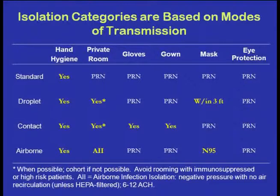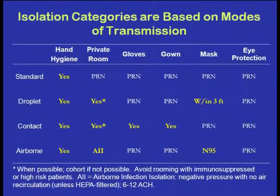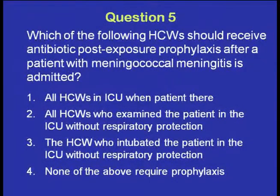Summary of precaution types: standard precautions apply to all patients. Droplet precautions require masking within three to six feet. Contact precautions require gown and gloves. Airborne precautions require a private room with negative pressure and an N95 respirator. Hand hygiene applies to all categories. Private rooms are mandatory for airborne, preferred for contact and droplet. Gloving is required for contact; gowning similarly. N95 masks are worn to enter a room of someone with an airborne disease. Eye protection is used when risk of splash with blood or body fluids exists.